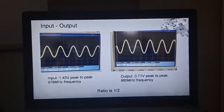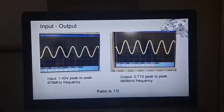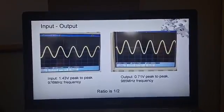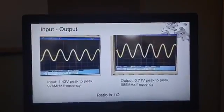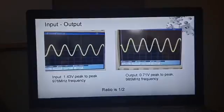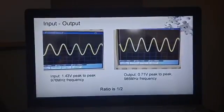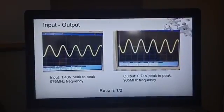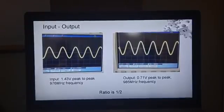Then I sent a wave inside of the resonator and measured the output with another antenna. As you can see, input has 1.43 volt peak-to-peak and output has 0.71 volt peak-to-peak at resonance frequency. The ratio is 1 over 2 at resonance frequency.